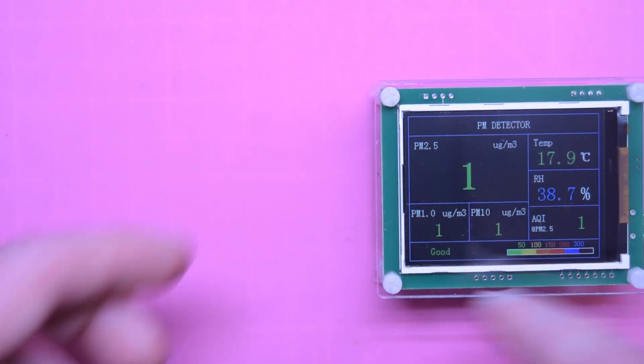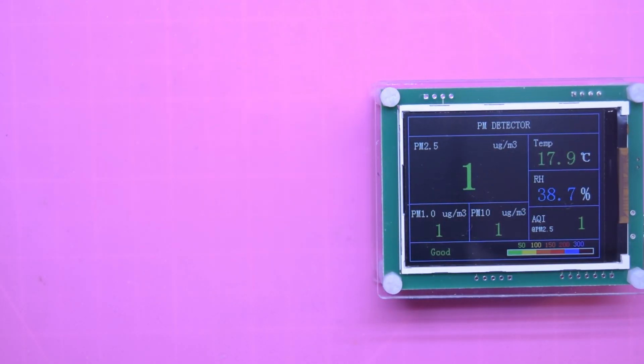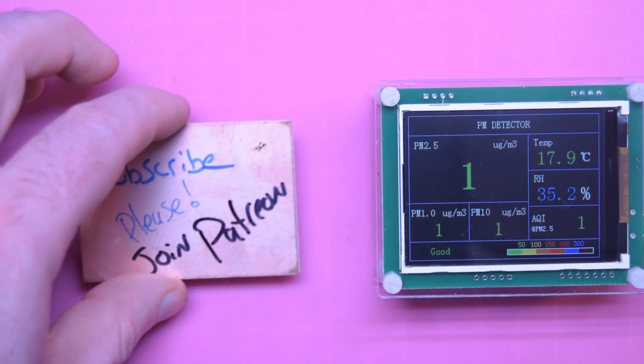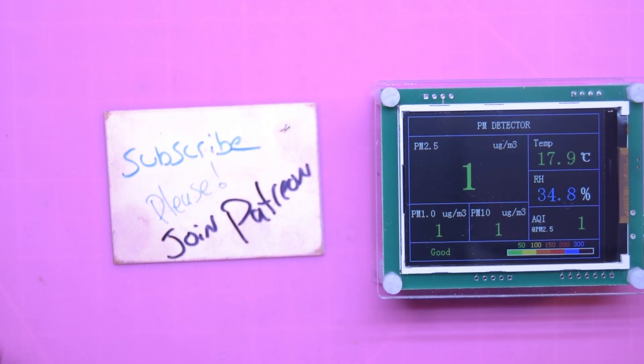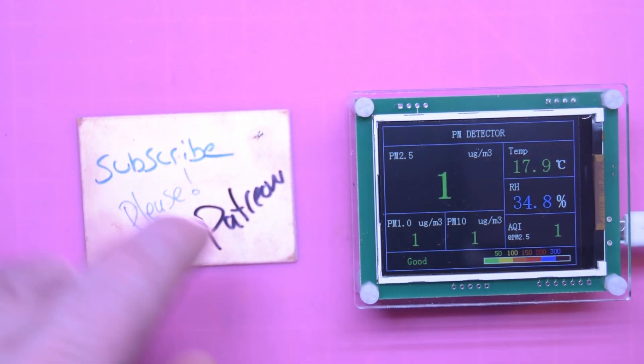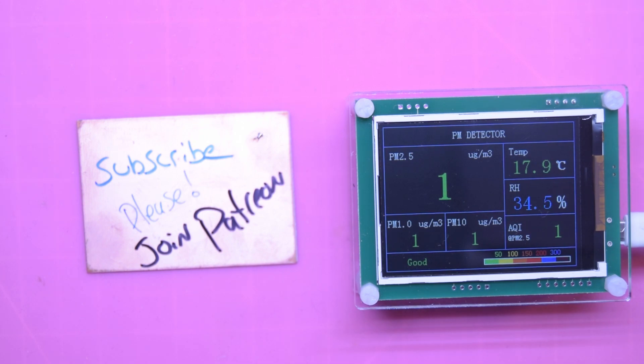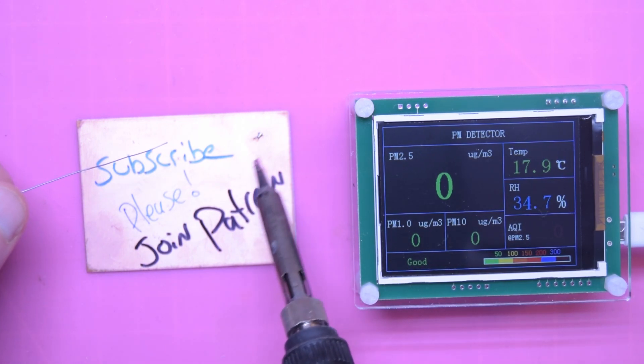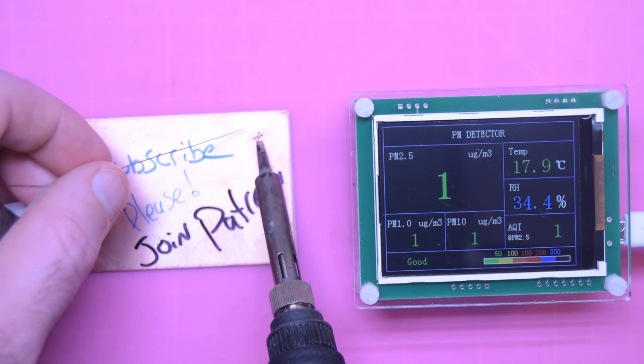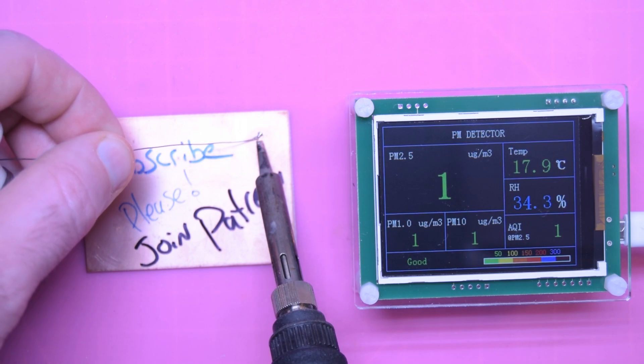And as you can see right now, the air is pretty okay. There's very few particles per square meter. So let me just bring in a random piece of copper. You might have seen this in a previous video, and my soldering iron and my solder. Let's just see if this thing can actually react to soldering fumes.